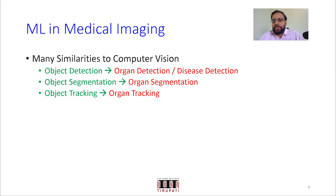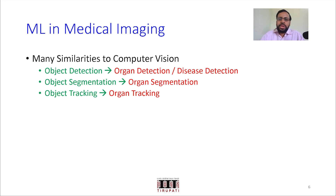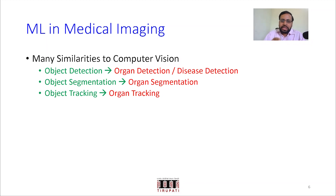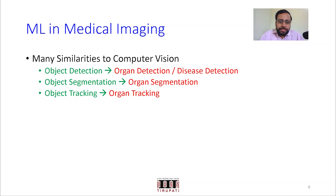In medical imaging, you want to detect a disease rather than an object. Organ detection is also there. Or this could be abnormality detection — for example, traumatic brain injuries we talked about earlier, where you would like to detect whether that abnormality is there or not, whether a particular disease is there or not, or detect a particular organ — perhaps as a region of interest.